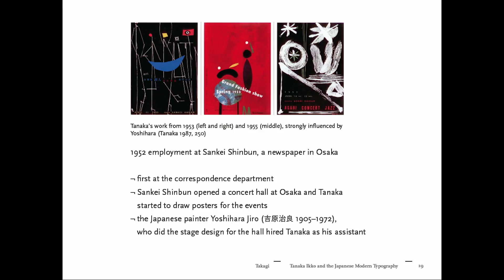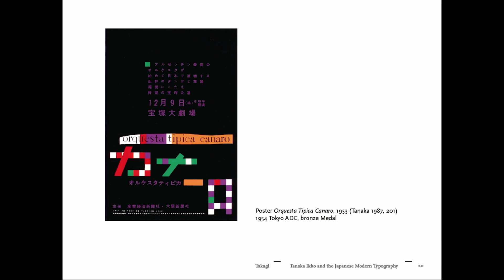In the beginning of his career he was quite far from doing graphic design. When he changed his position to Sankei Shimbun, a newspaper in Osaka, he worked at the correspondence department. After office hours, he sneaked out to draw posters — a self-given task for the concert hall opened by Sankei Shimbun in Osaka. Those hand-drawn posters were discovered by Yoshihara Jiro, a contemporary painter and stage designer, who hired Tanaka as his assistant. Due to lack of time he once cut off the text part and made a purely typographic poster — his first acknowledged success.